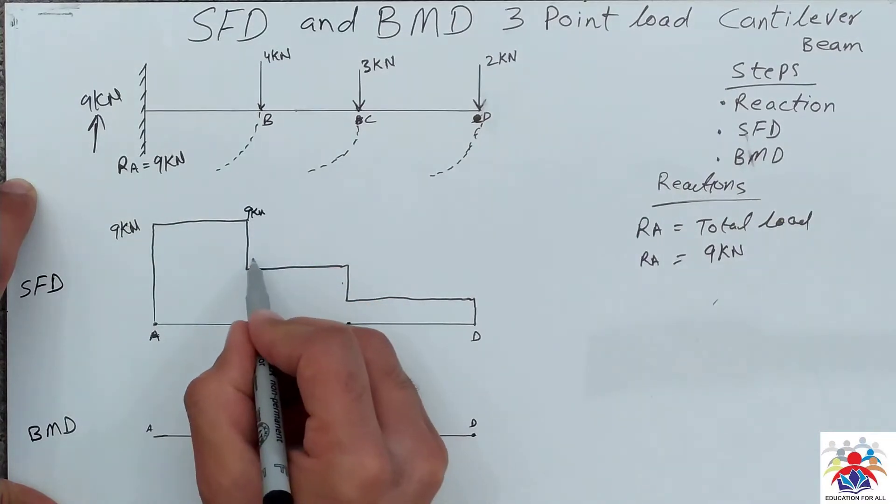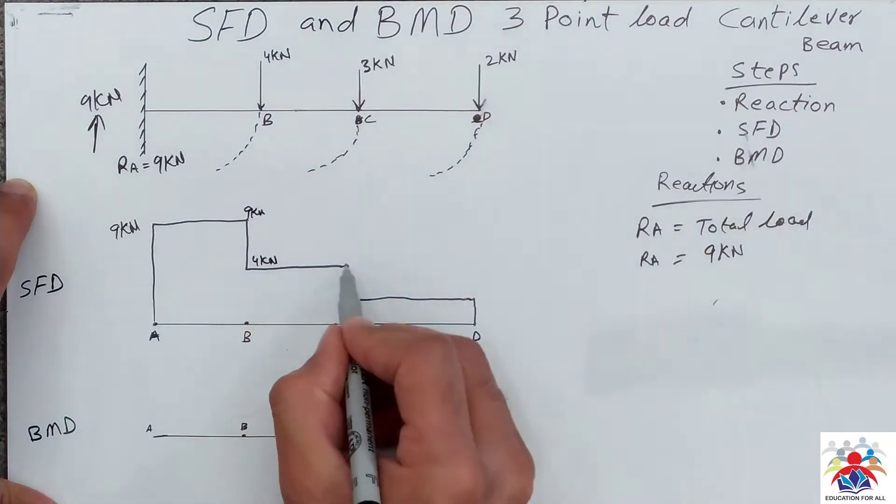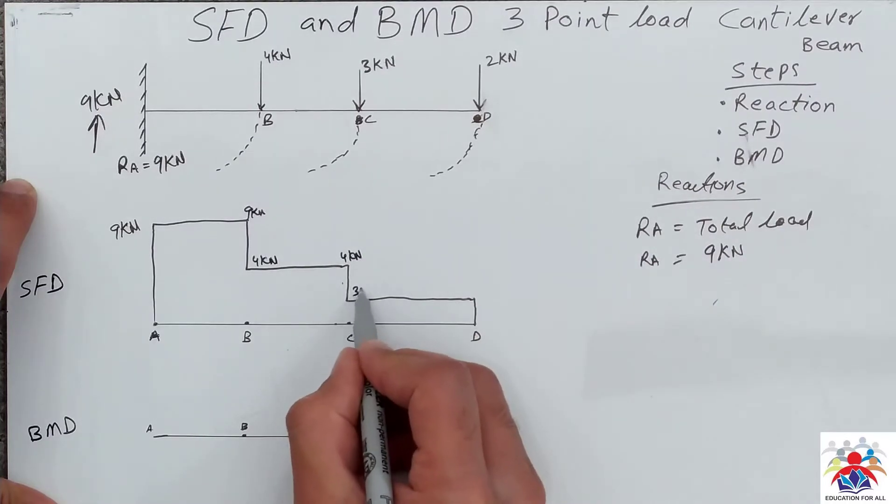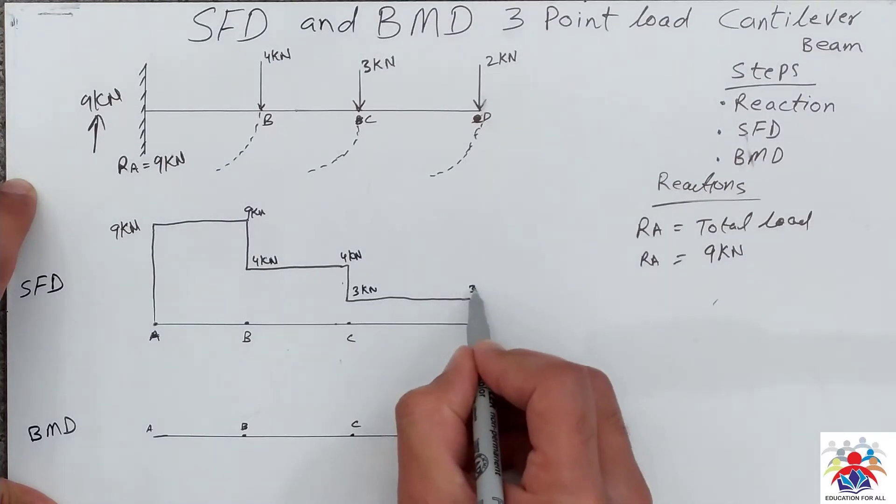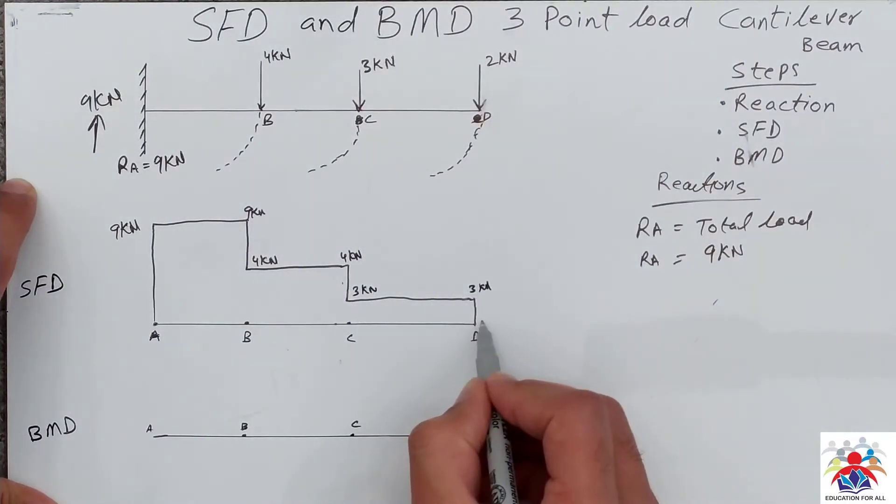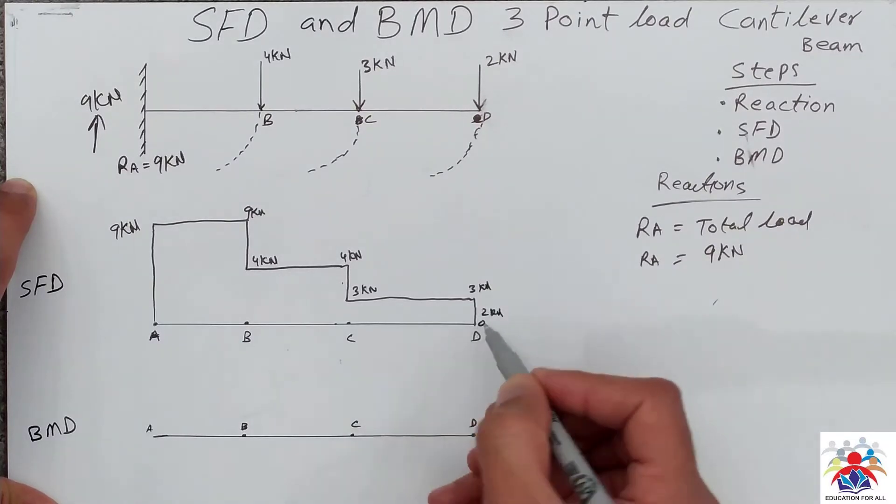So in here we have 9 kilonewtons, then we have 4 kilonewtons. Obviously 4 kilonewtons at this end as well, so 3 kilonewtons and then 3 kilonewtons. And here we have 2 kilonewtons, and at this point we have 0 because we cover all the distance of 9.